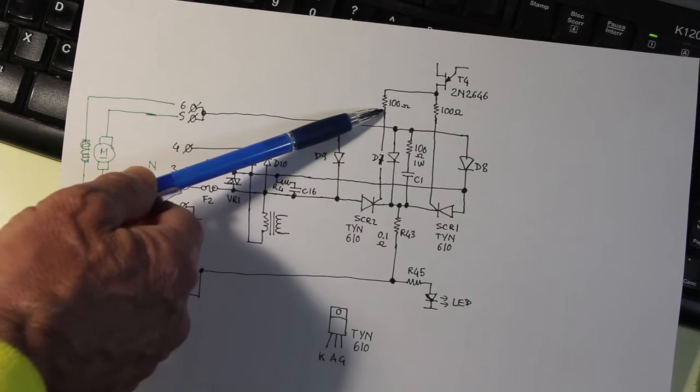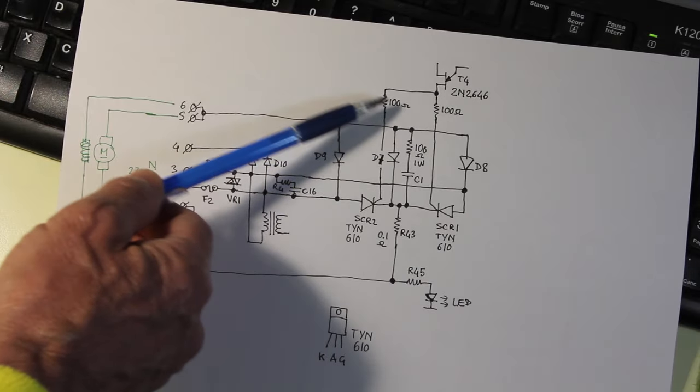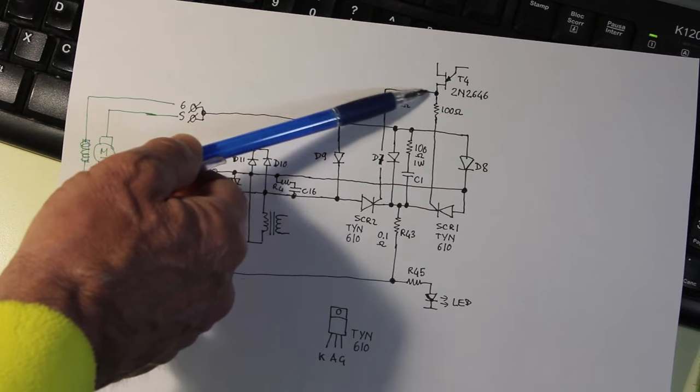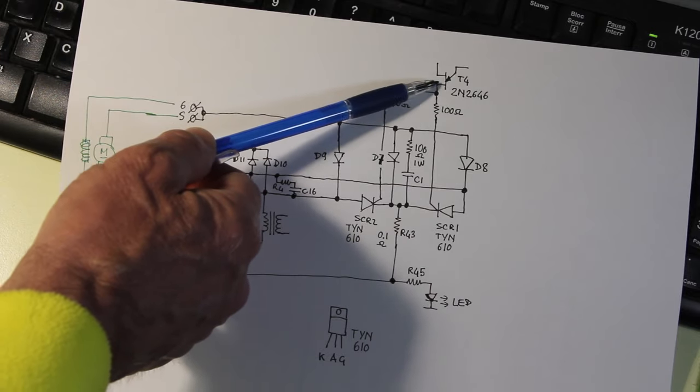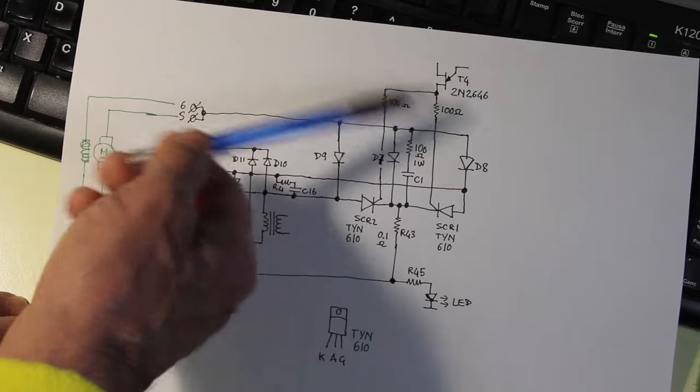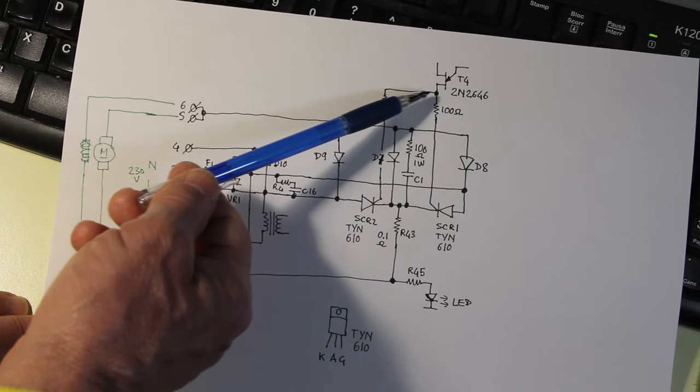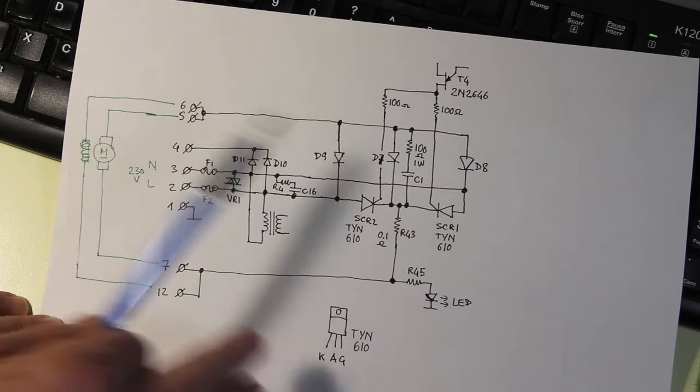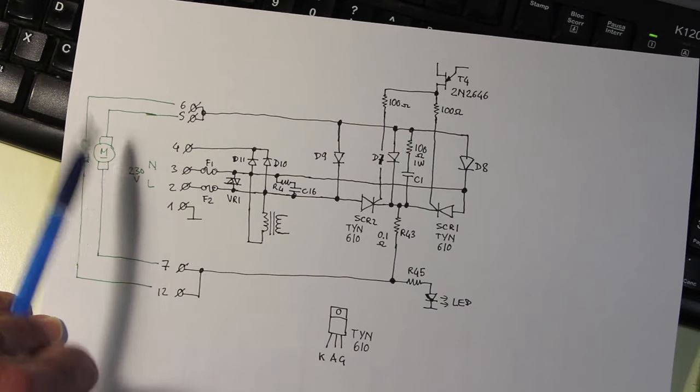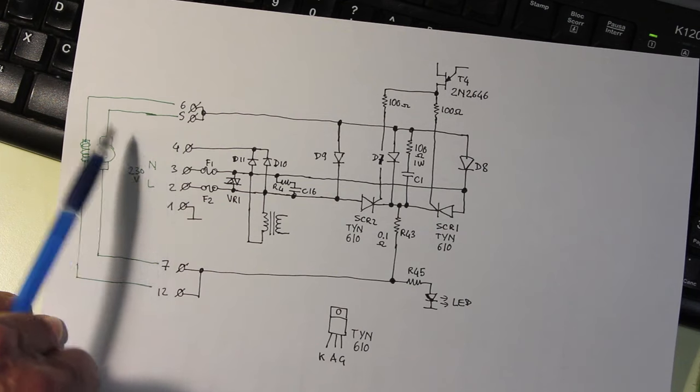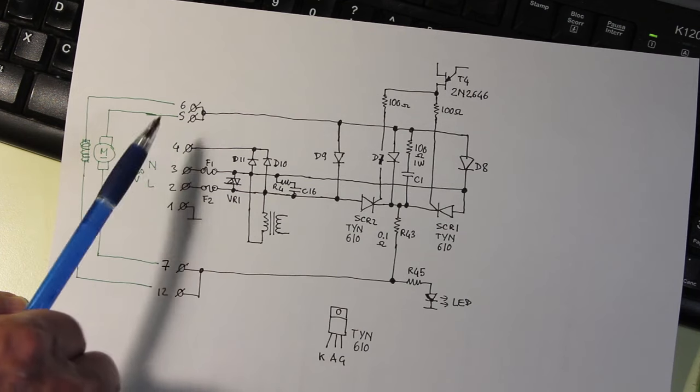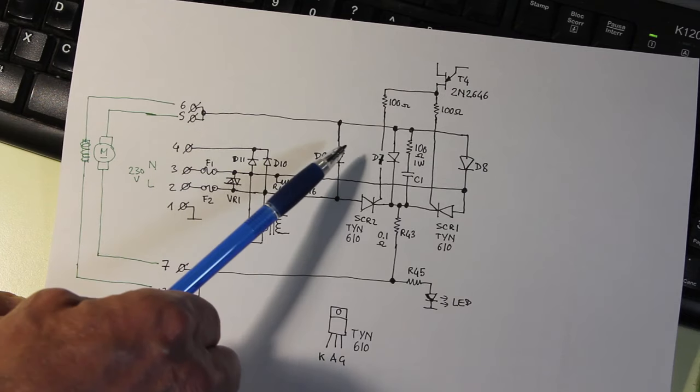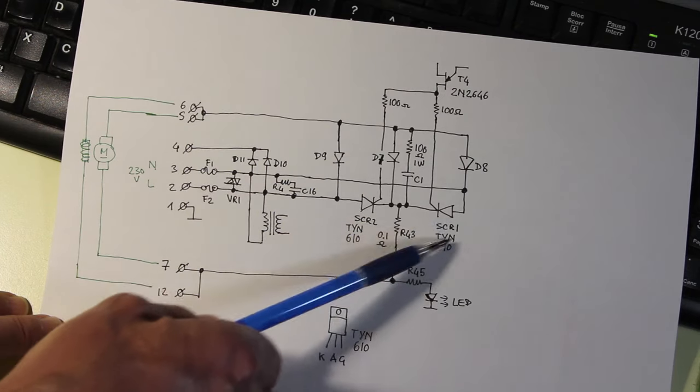Through these two resistors that are in turn fed through this unijunction transistor, which is another component that is really hard to find nowadays. And the problem here was that the motor was vibrating, and never reached maximum power. So one possible problem would be that one of these two thyristors was broken, or maybe one of these diodes, these two diodes.